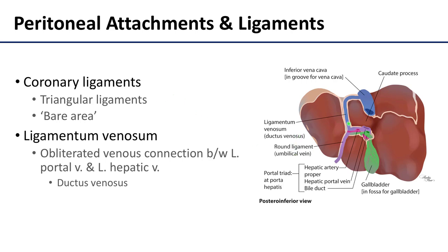Another area to note is the ligamentum venosum. This is the obliterated venous connection between the left portal vein and the left hepatic vein. Fetally, this is referred to as the ductus venosus. You can see the ligamentum venosum sitting in the groove for the ligamentum venosum — so very aptly named — between the caudate and the left lobe.